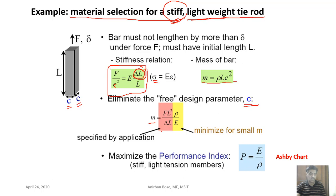After eliminating the free variable C from the two equations, the mass becomes: m = F × L² / δL × (ρ/E). The material property combination ρ/E must be minimized to reduce mass, which means the reciprocal E/ρ must be maximized. Therefore, the performance index for a stiff, lightweight tie rod is E/ρ.